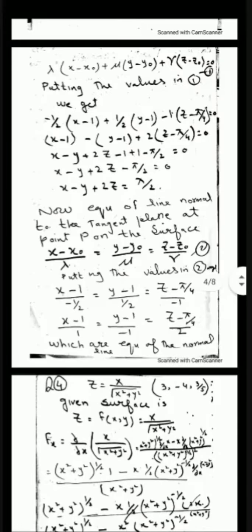Now we will find the equation of the line normal to the tangent plane at point P on the surface. The equation of the normal line is: (x - x₀)/λ = (y - y₀)/μ = (z - z₀)/μ. Putting x₀ = 1, y₀ = 1, z₀ = π/4 and the values of λ and μ, the required answer is: (x-1)/1 = (y-1)/1 = (z - π/4)/2, which is the required equation of the normal line.